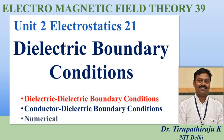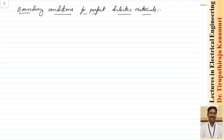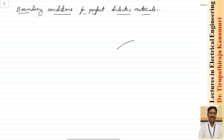Today we are going to discuss boundary conditions for perfect dielectric materials as well as the boundary conditions between a conductor and dielectric. For taking the boundary conditions, let us assume there is a boundary — one side having epsilon 2 as region 2, and the other side having epsilon 1 as region 1.